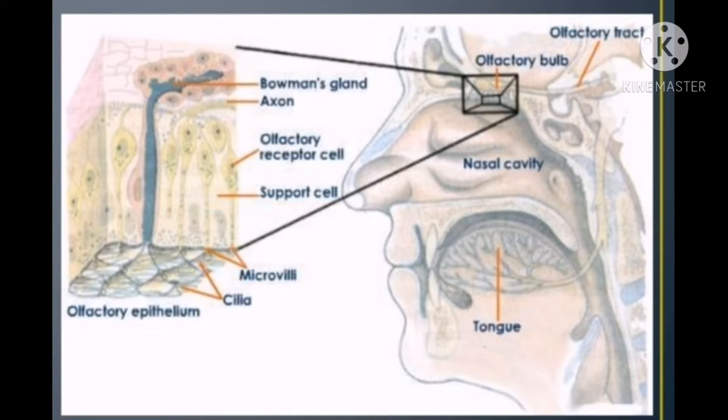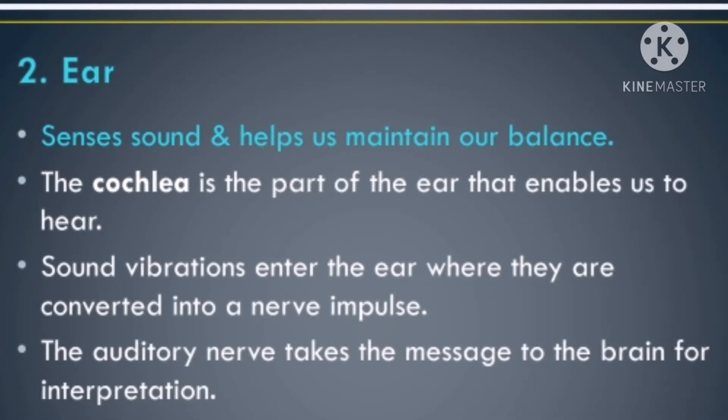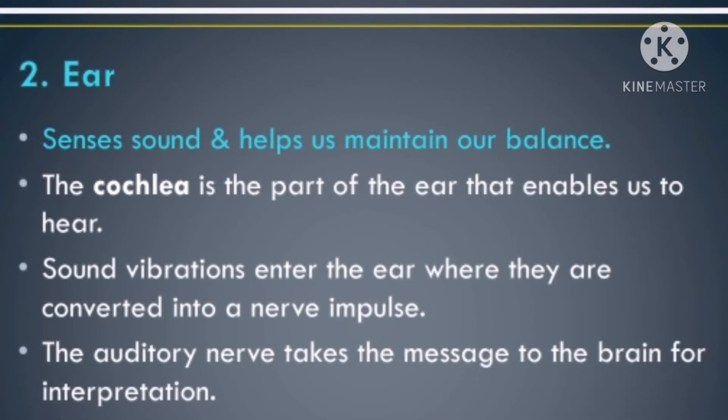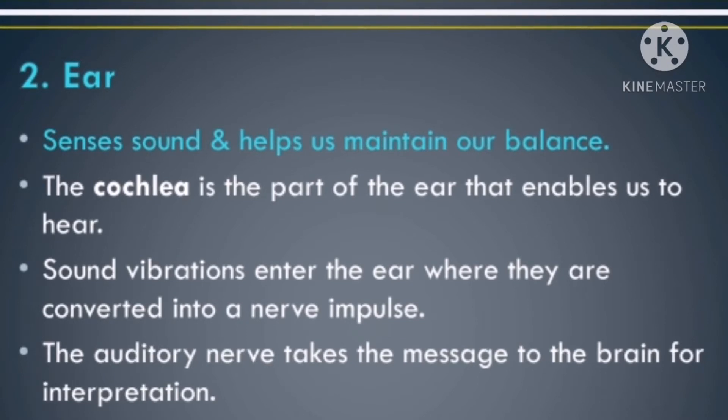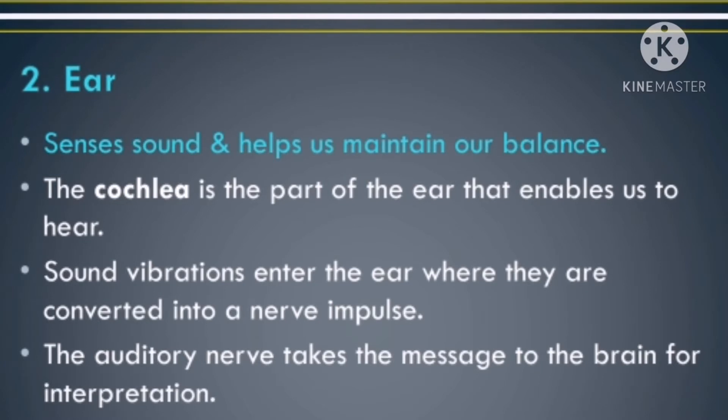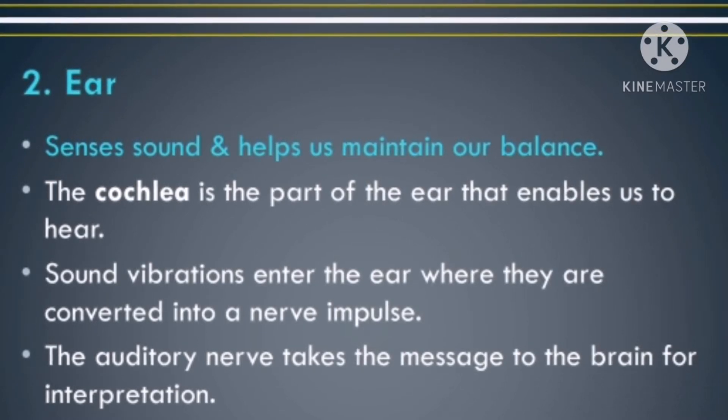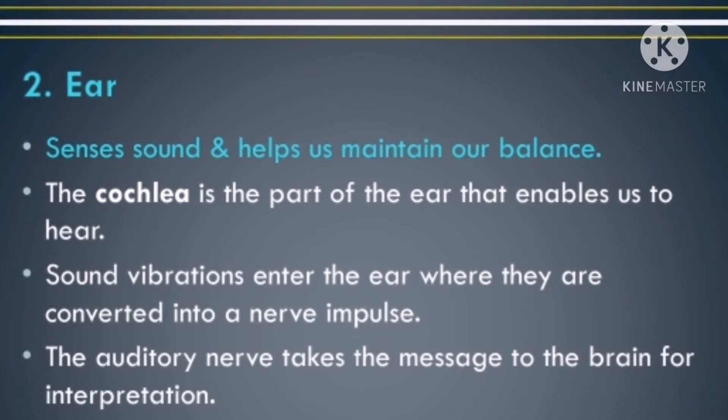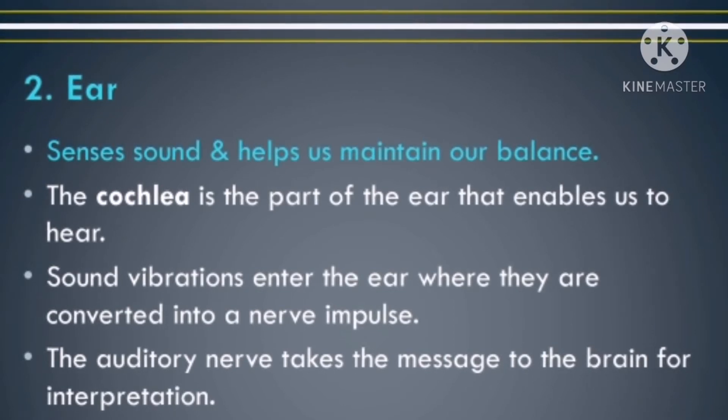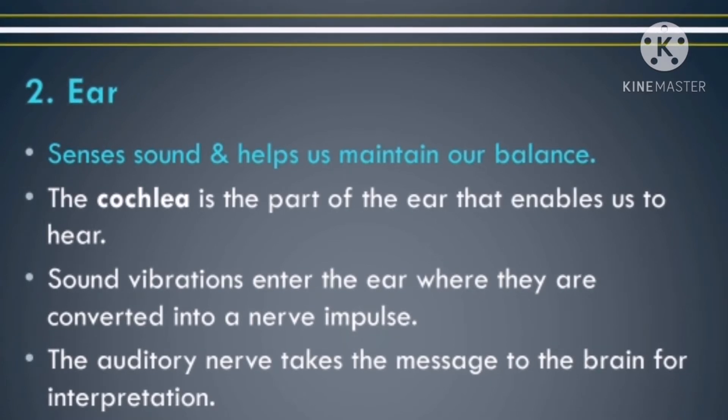Now the next sensory organ I will talk about is the ear. It senses sound and helps us maintain our balance. The cochlea is the part of the ear that enables us to hear. Sound vibrations enter the ear where they are converted into a nerve impulse. The auditory nerve takes the message to the brain for interpretation.